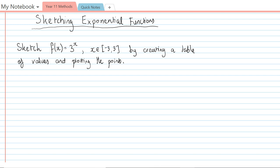So we need to be able to look at an equation and read the transformations of it, and we're going to get a bit more practice with that today. Let's just jump right in. Sketch f(x) = 3^x for x in the range negative 3 to 3 inclusive by creating a table of values and plotting the points. So setting up the table of values, please excuse the poorly drawn one.